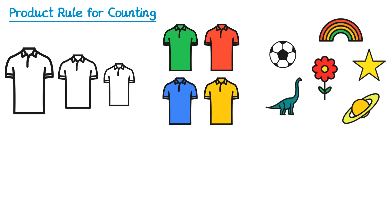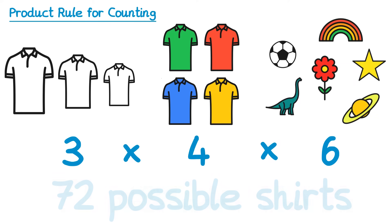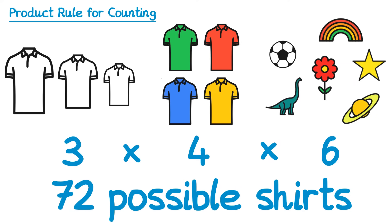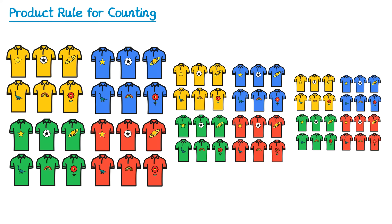This is where we use the product rule for counting. There are three ways to choose the size of the t-shirt, four ways to choose the color, and six ways to choose the logo. So we just multiply these together: three times four times six, which gives you 72 possible shirts. You can see all of these visually — we've got all of the large ones, then the medium ones, then the small ones, grouped by color so it's easier to see we've not missed one.